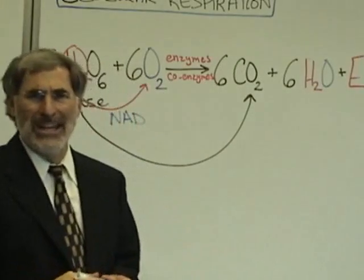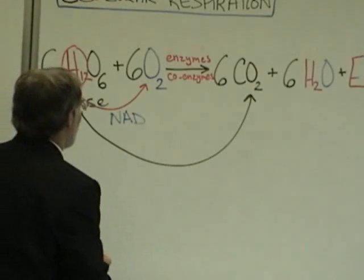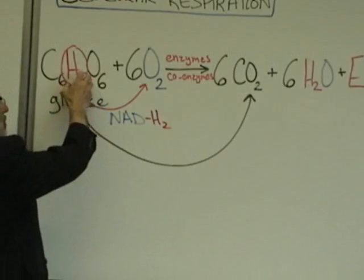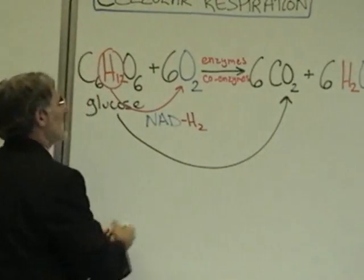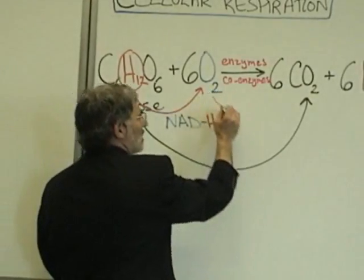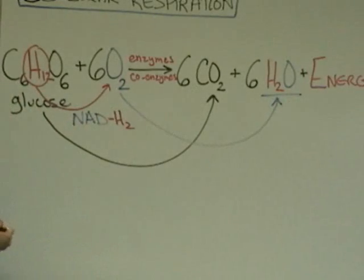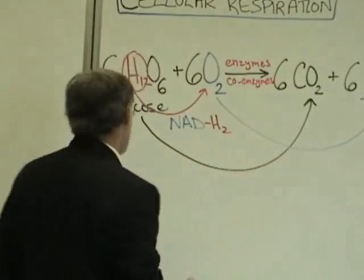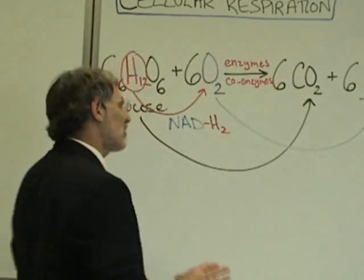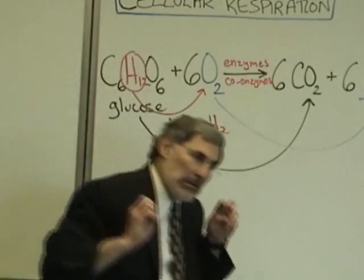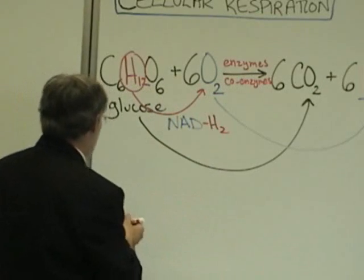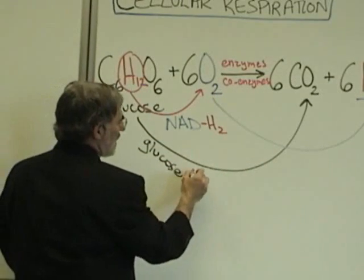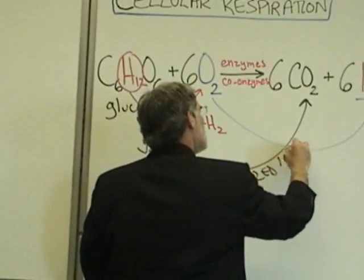NAD stands for nicotinamide adenine dinucleotide. It transfers hydrogen atoms and electrons two at a time from the sugar molecule ultimately to oxygen. Transferring hydrogen atoms onto oxygen atoms produces H₂O — water. This process of transferring hydrogen atoms and electrons from one molecule to another is called oxidation-reduction reactions. Whenever a molecule loses hydrogen atoms and electrons, we say it has become oxidized. Since hydrogen atoms are removed from glucose, glucose is oxidized into carbon dioxide.